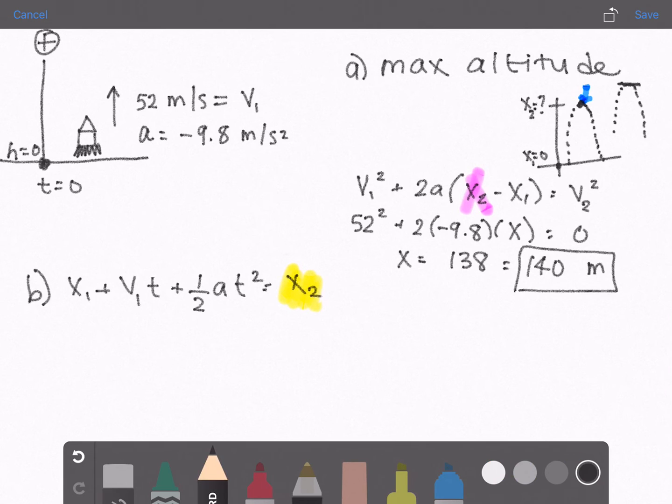And we're given everything else: x1 is 0, v1 is 52 times 1 second plus 1 half a is negative 9.8, 1 squared is 1 equals x. And if you solve all of this you'll get x equals 47.1 rounded to two sig figs is 47 and units is meters.